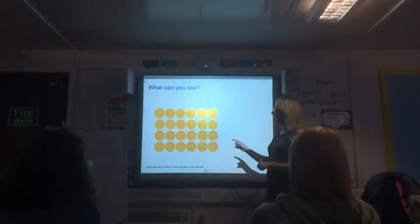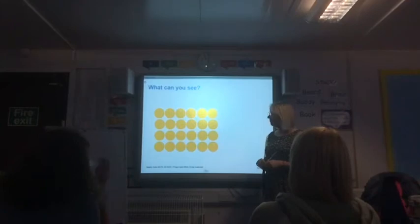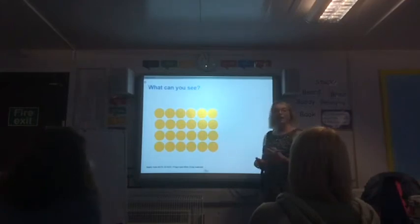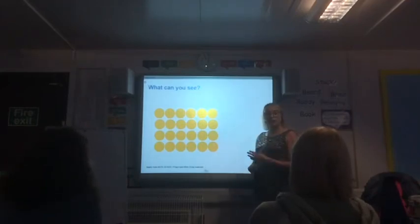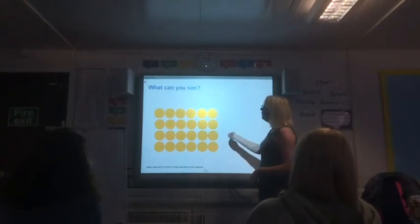Have a look at the board — what can you see? Yellow dots. Vertical, horizontal, yellow dots. An array. We can see dots, we can see vertical lines, we can see horizontal lines — we call that an array. Thank you very much.